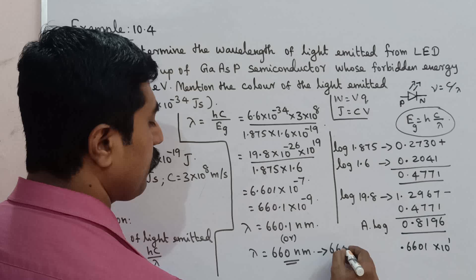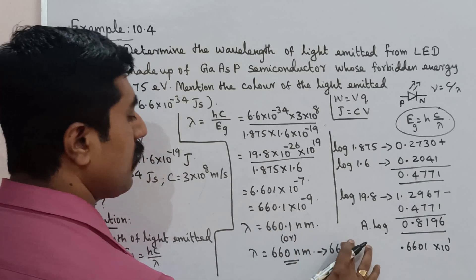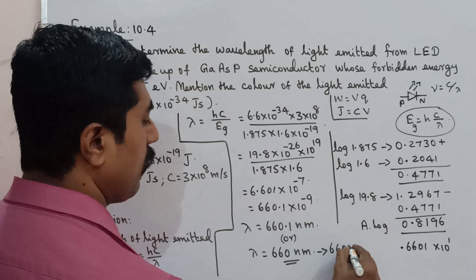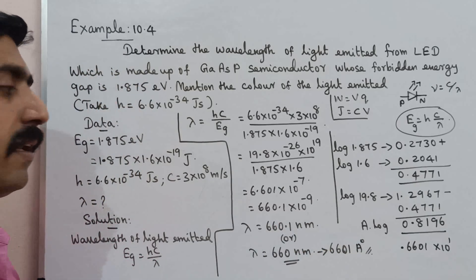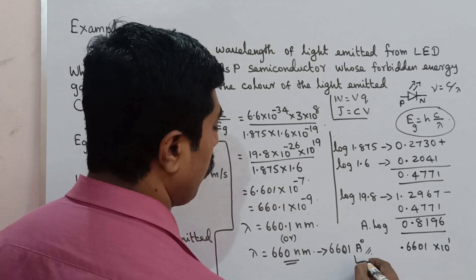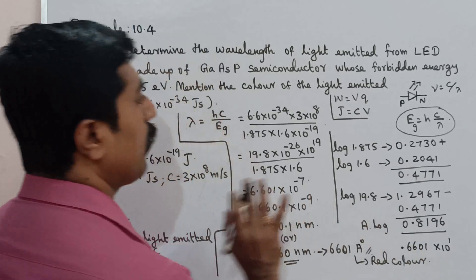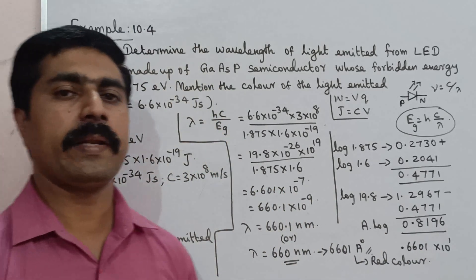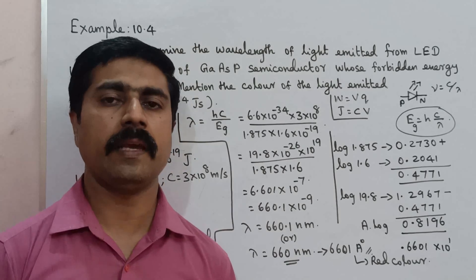The textbook rounds this to 660 nanometers. This wavelength of 660 nanometers corresponds to red color. So this is the most important. Practice well. All the best, thank you.